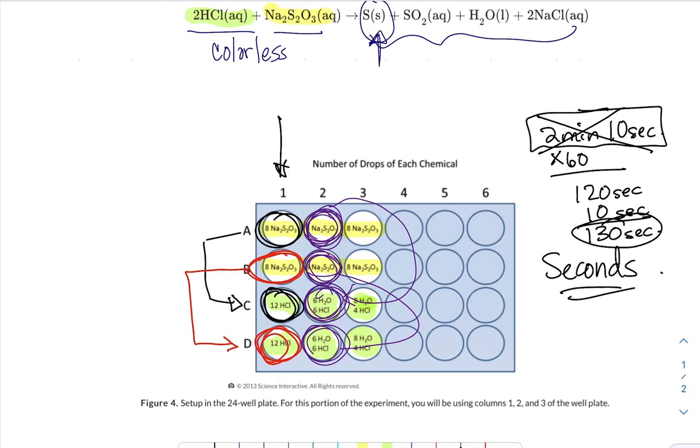Now the time in column one will not necessarily be the same as the time in column two, which will not necessarily be the same as the time in column three. But the two trials in column three should be about the same time. So I hope this makes sense.